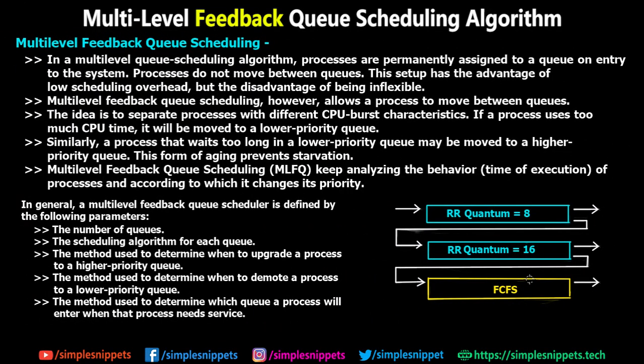Hey, what's going on guys, Tanmayer for Simple Snippets, and welcome back to another video tutorial under operating systems. Today we're going to be taking a look at multi-level feedback queue scheduling algorithm, which is a CPU scheduling algorithm. In the previous video of this CPU scheduling playlist we saw multi-level queue scheduling. In multi-level scheduling there are two different types: multi-level queue scheduling and multi-level feedback queue scheduling.